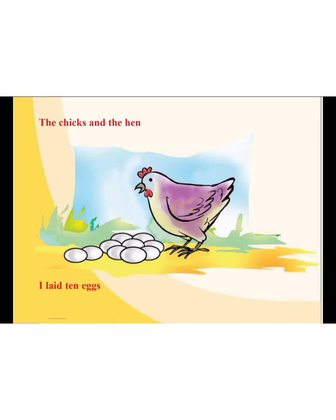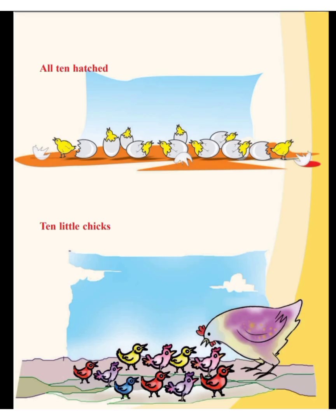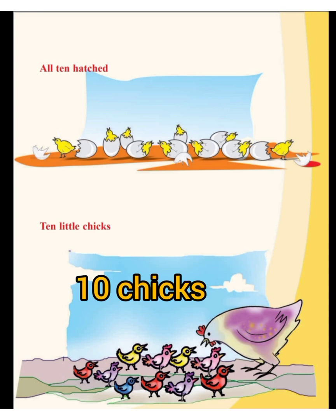Let's look at this — it's also from our textbook: the chick and the hen. All of you look at this picture. Here is a hen. It laid ten eggs. All ten eggs hatched and ten little chicks came out.